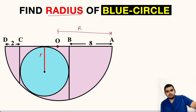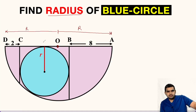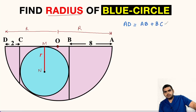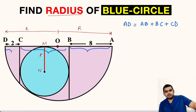So this side can be written as capital R. Now let us name these two points: this point as M and this point as N. We can write AD, that is the diameter of this semicircle, as AB plus BC plus CD. So AB is this distance, BC is this distance, and CD is this distance.